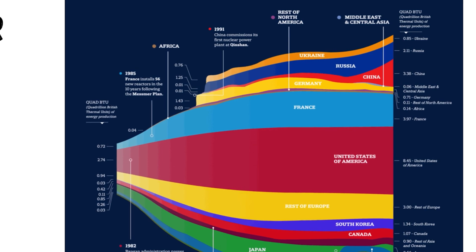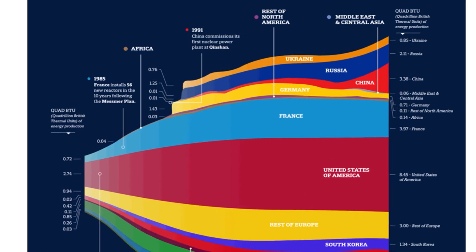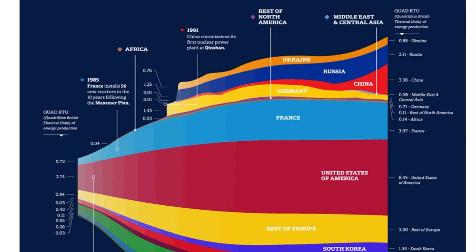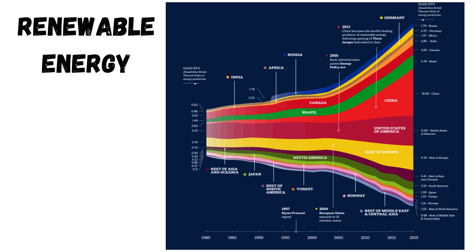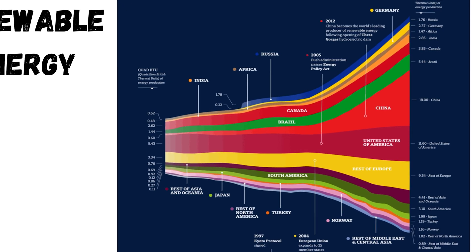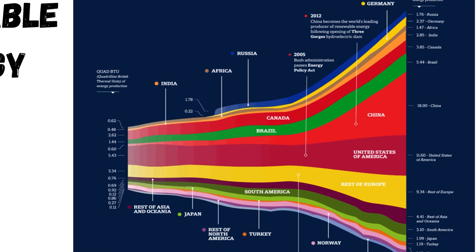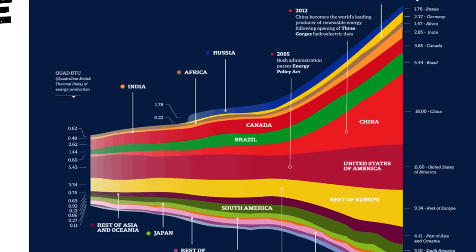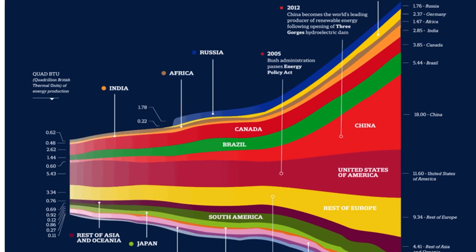Despite the fact that many countries have recently pivoted away from nuclear energy, it still powers about 10% of the world's electricity. Renewable energy sources, including wind, hydro, and solar, account for about 23% of electricity production worldwide. China leads the front on renewable production, while the US comes in second place. While renewable energy production has ramped up in recent years, more countries will need to ramp up their renewable energy production in order to reach net-zero targets by 2050.